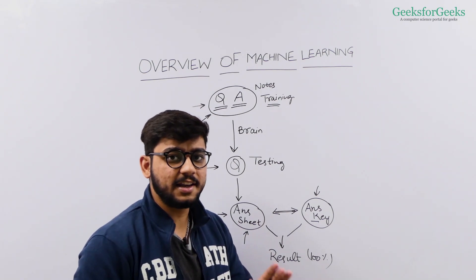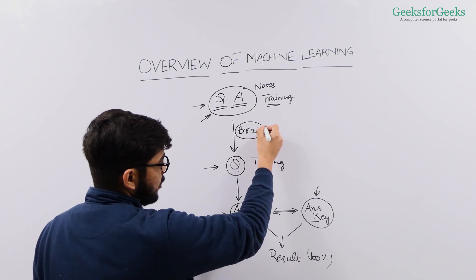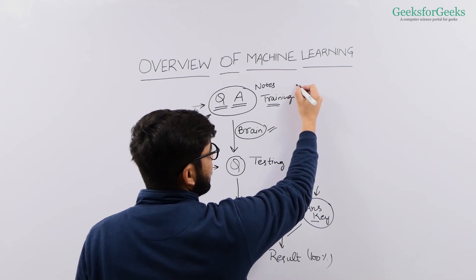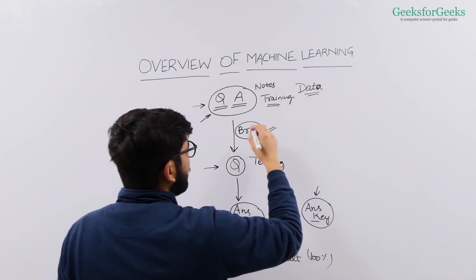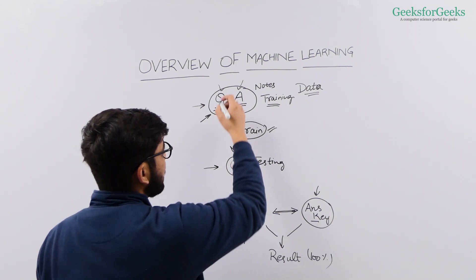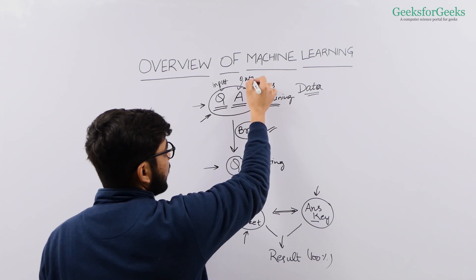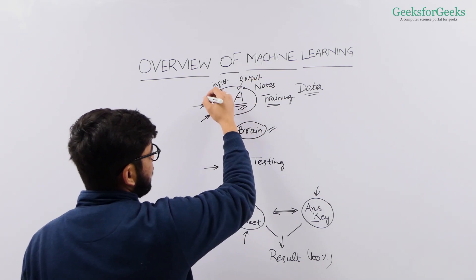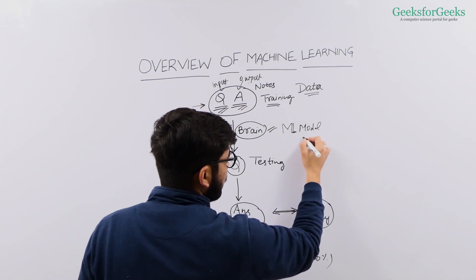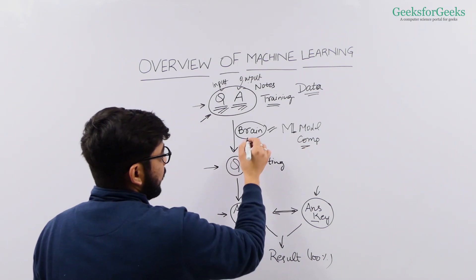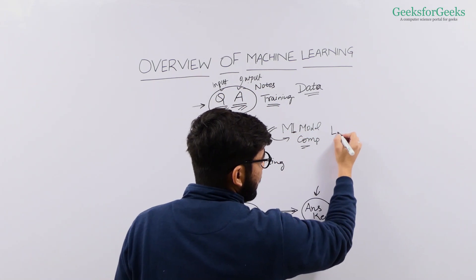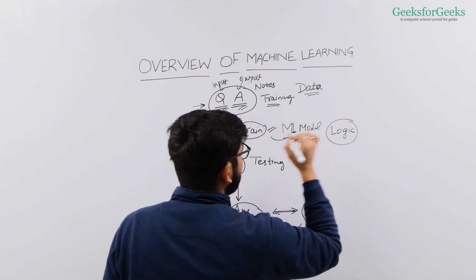This is how we actually train our models as well. You trained your brain, so the model was your brain. But in machine learning, we have a computer. We feed data to our model — your data can have both input and output, or it can have only input. Let's take a general example where we have both. These questions and answers are now referred to as input and output. This is your machine learning model, which is your computer. You train this model by giving it input and output, and while training, your model will come up with a logic based on the data you have given it.